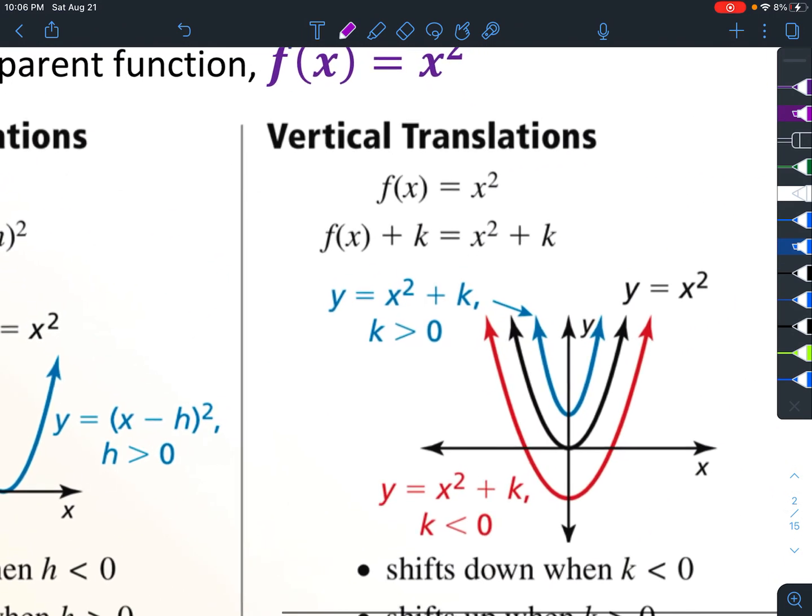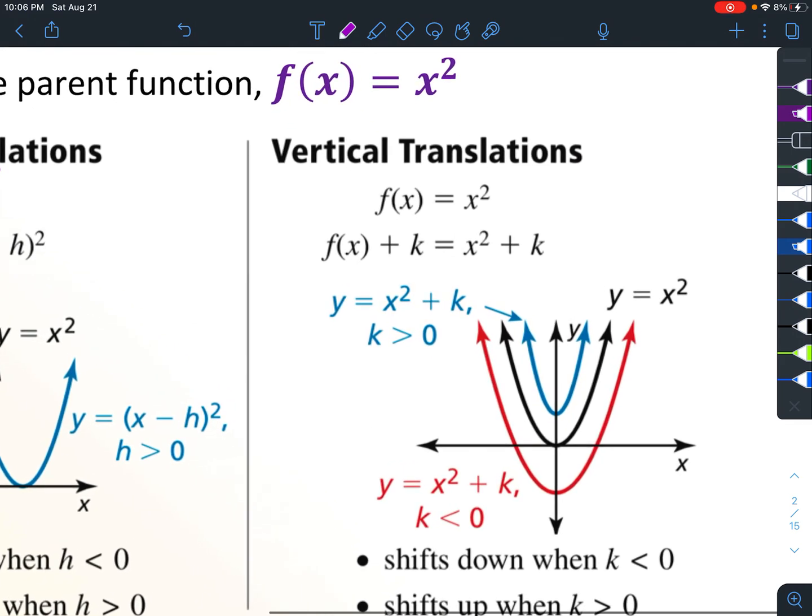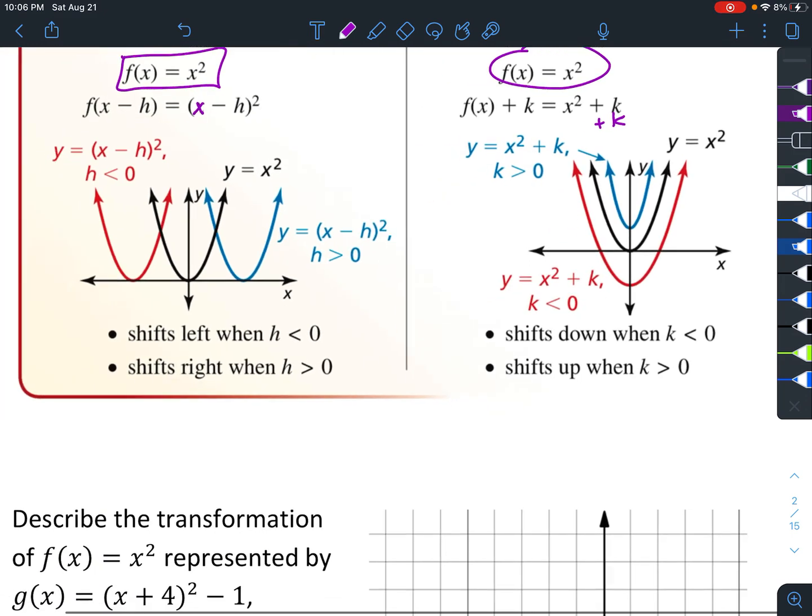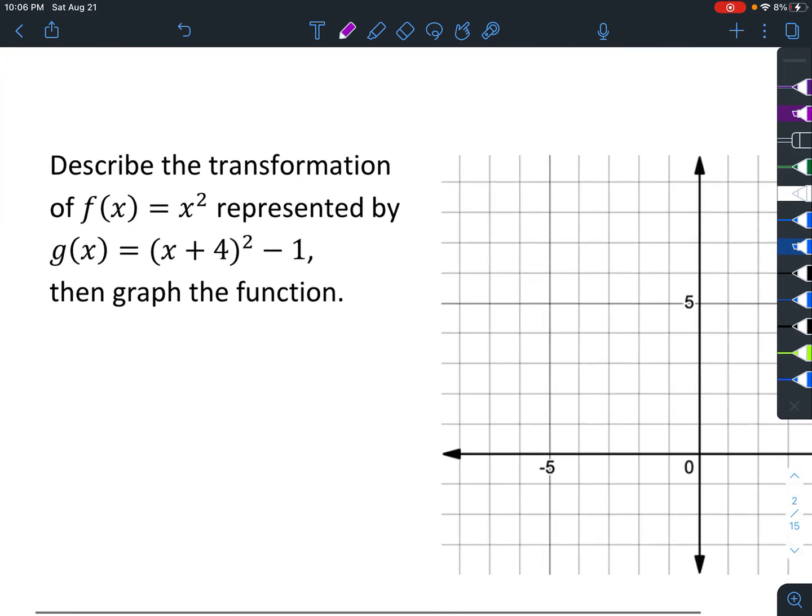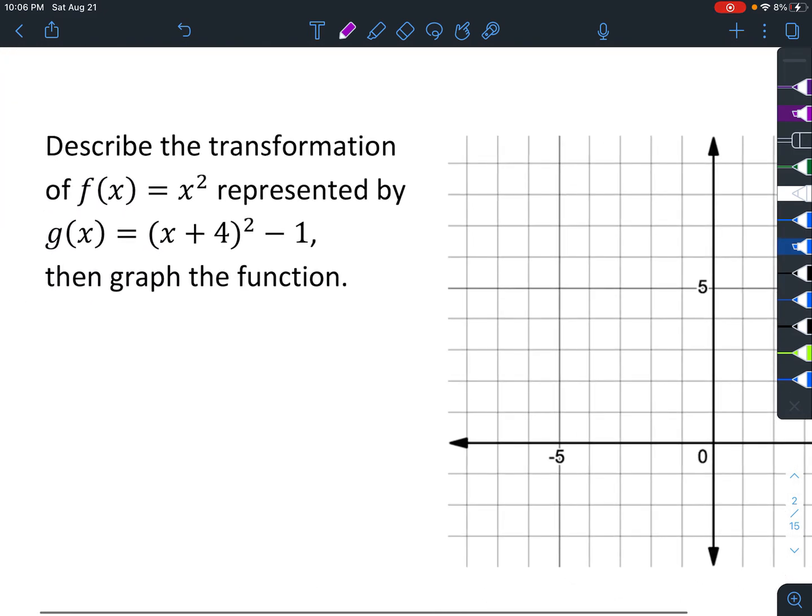Vertical translation really affects the output, and that's why it's added. Here's the parent function, and you can see that if something's added to it, if it's positive it's going to go upward. If it's negative, then it moves downward. Okay, so we'll just focus on those two transformations first.